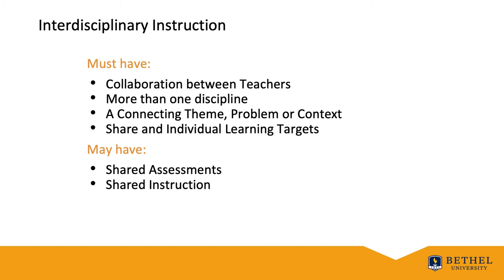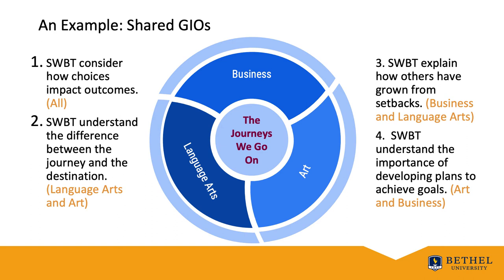Having an example can really help make learning more clear. Here's an example of the GIOs that might happen in a 10-day interdisciplinary unit called 'The Journeys We Go On.' It's a shared theme between business, art, and language arts. You'll notice that all of the subjects are taking ownership of that first GIO — 'consider how choices impact outcomes' — which is a very broad and important concept and speaks to life lessons. Each of the remaining GIOs are shared between only two of the disciplines.